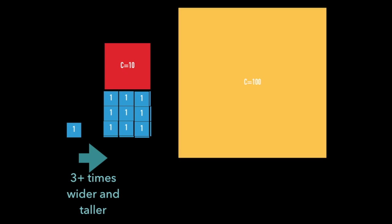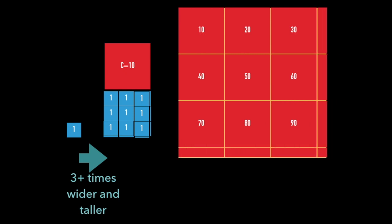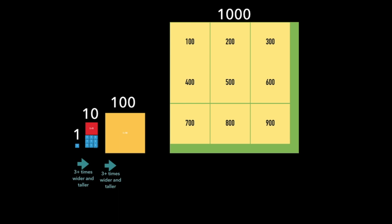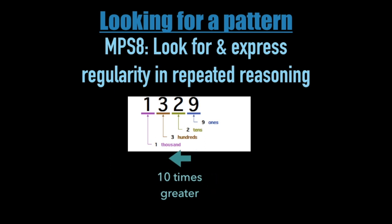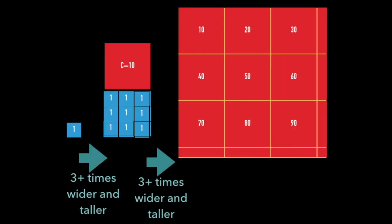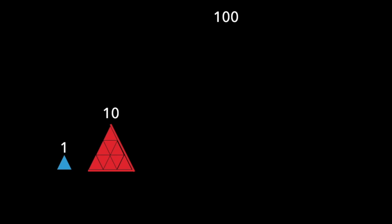So 1 to 10 was about 3 times wider and taller. But what about 10 to 100? Could that also be 3 times wider and taller? What about 100 to 1,000? A key concept in our number system is that every movement across one place value is 10 times larger or smaller, and represented geometrically, we need to enlarge the square a bit more than 3 times in height and width to achieve this. But would the pattern work with other shapes that were not squares?